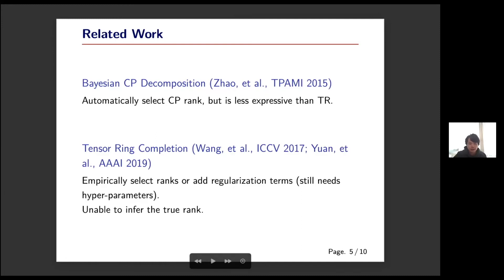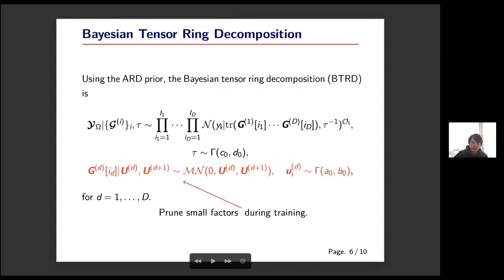The traditional tensor ring completion models empirically select the ranks or just add some regularization terms which also need hyperparameters. These models are not able to infer the underlying true ranks. So in this work we propose to use the ARD prior in the Bayesian tensor ring decomposition.